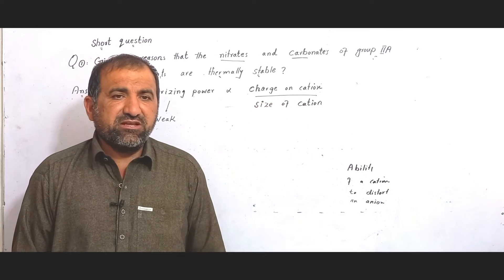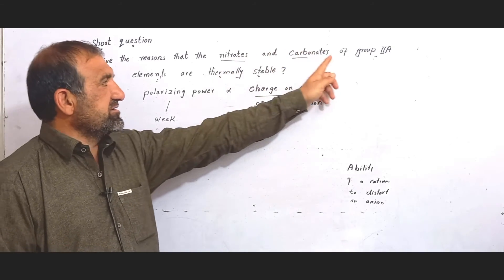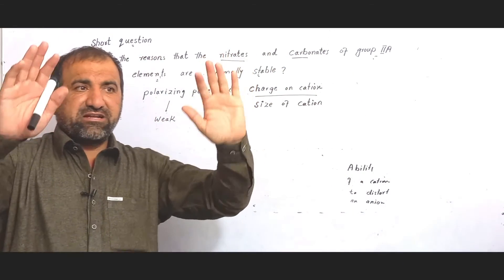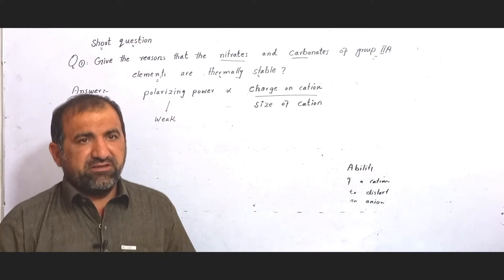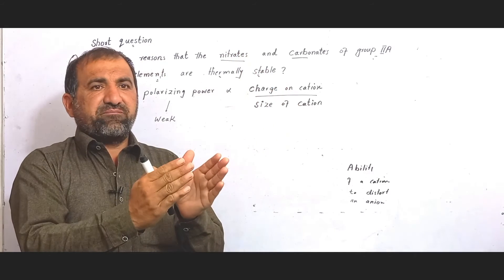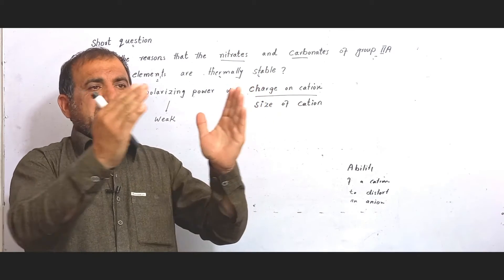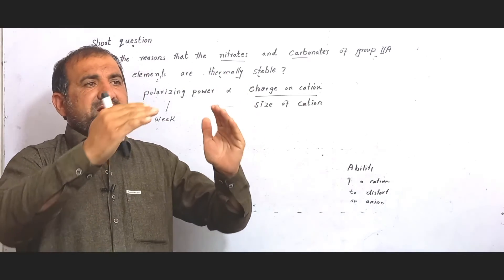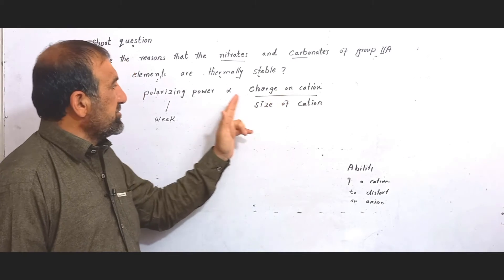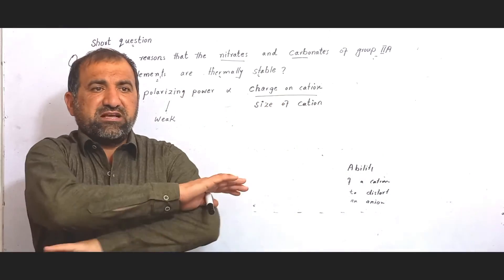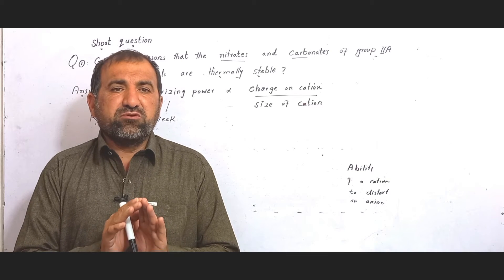We can say that the second A group element nitrates and carbonates are thermally stable. Now, going down the group, the size is going to increase, the charge density is going to decrease, and the polarizing power is going to decrease, so the level of thermal stability is going to increase.